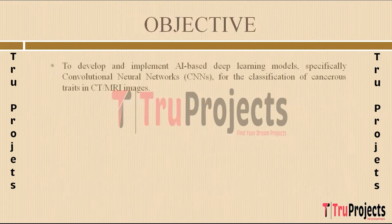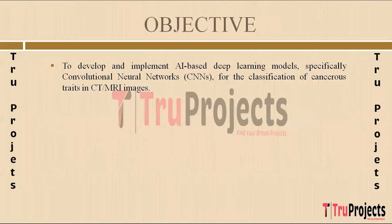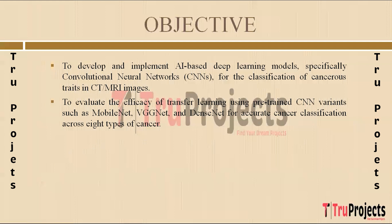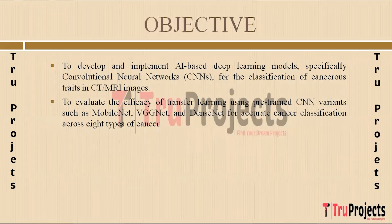The aim is to create and deploy sophisticated machine learning algorithms, particularly convolutional neural networks tailored to analyze medical images for cancer detection. The goal is to establish a robust computational framework capable of accurately identifying cancerous traits within CT or MRI images, and to assess the performance of pre-trained CNN models including MobileNet, VGGNet and DenseNet when adapted to classify various types of cancer. This evaluation aims to determine the suitability and effectiveness of transfer learning for cancer detection tasks.